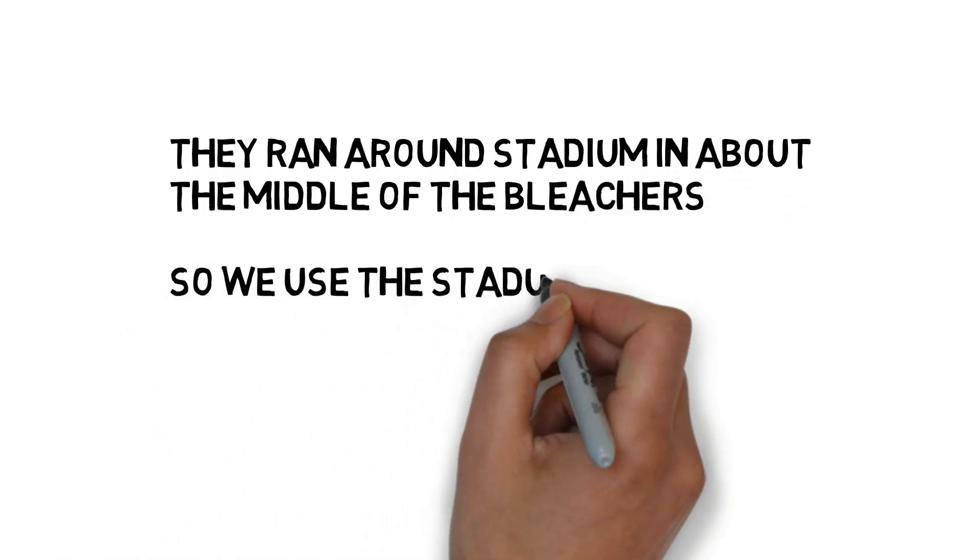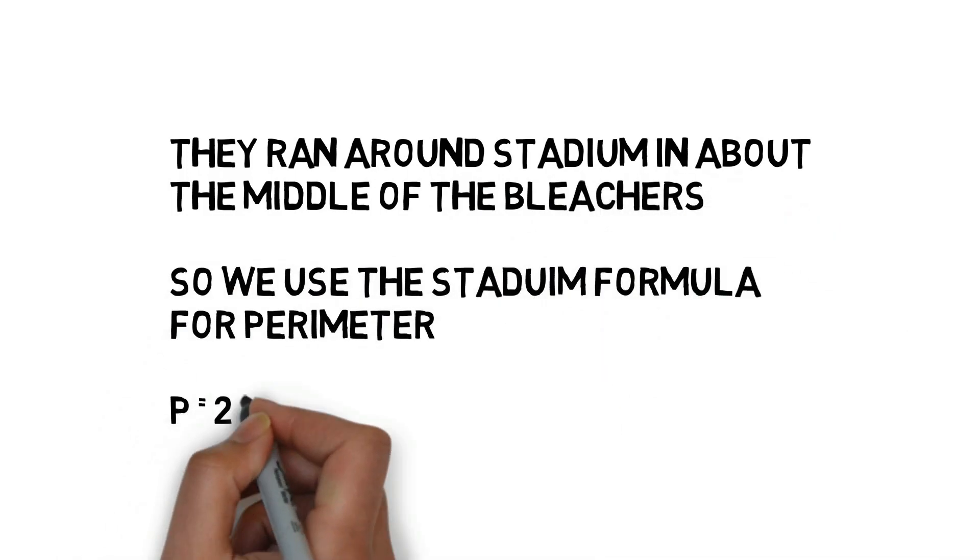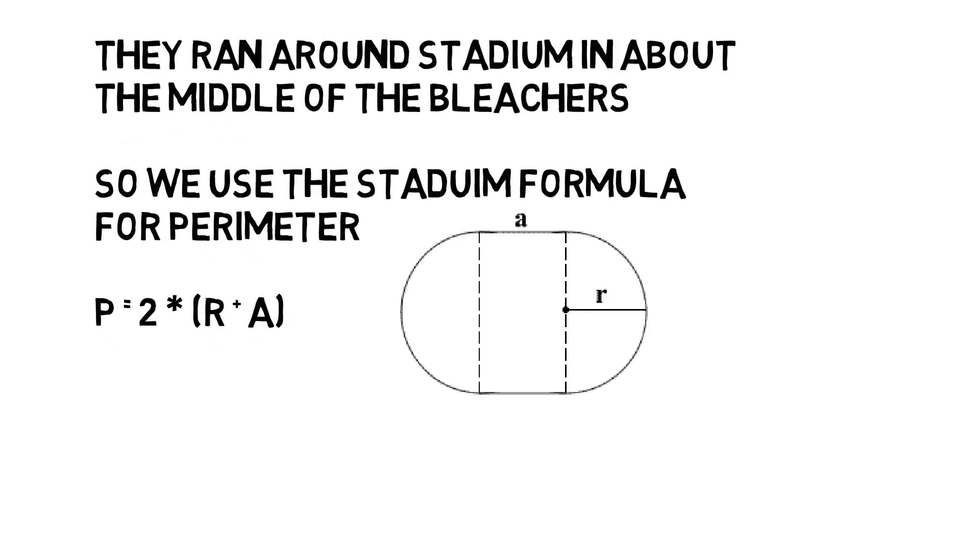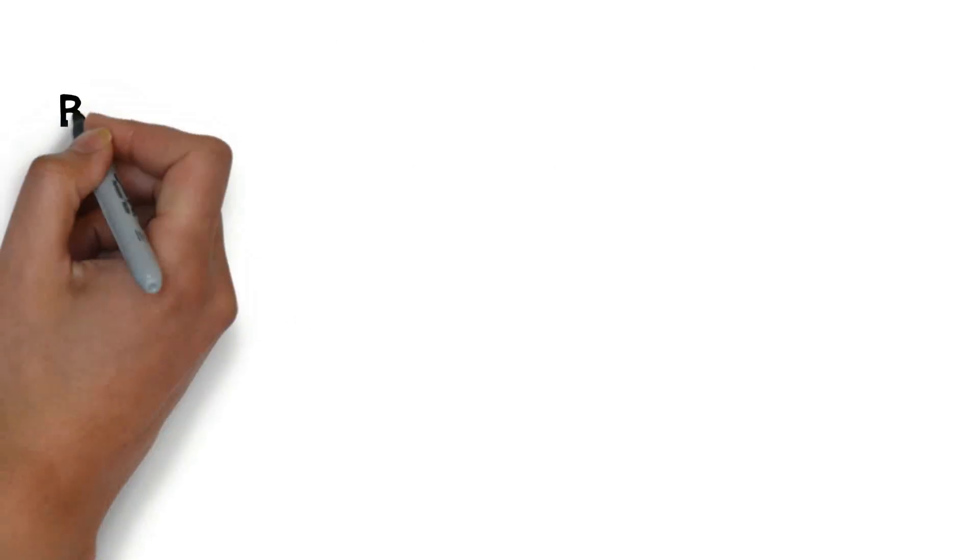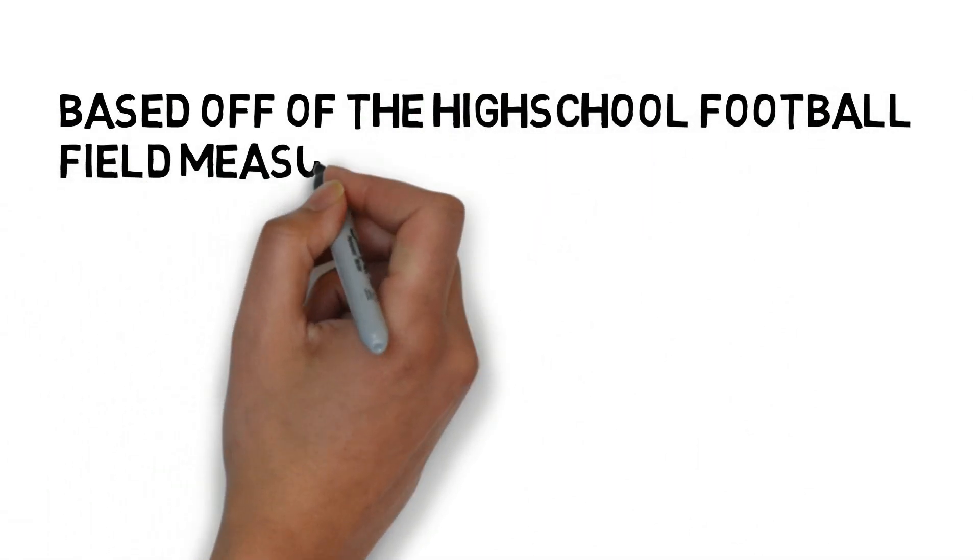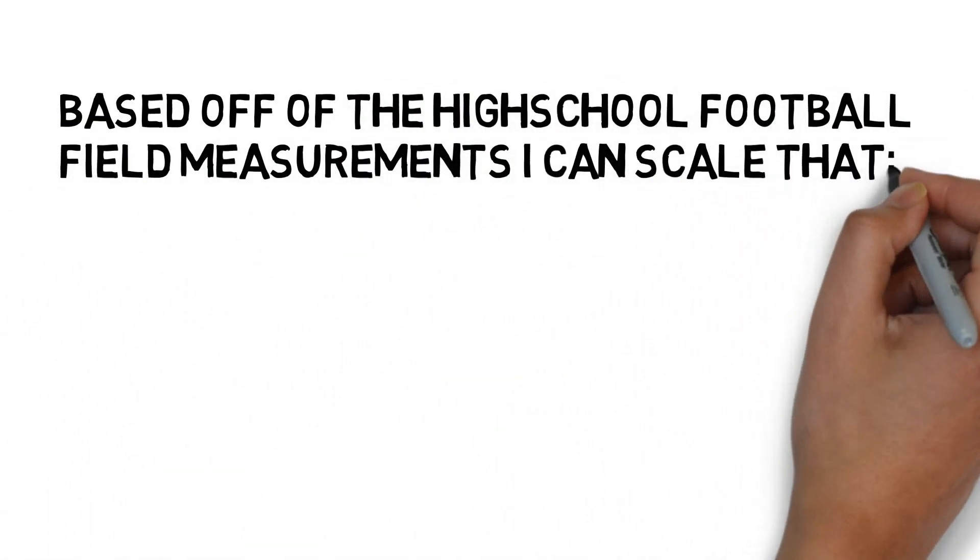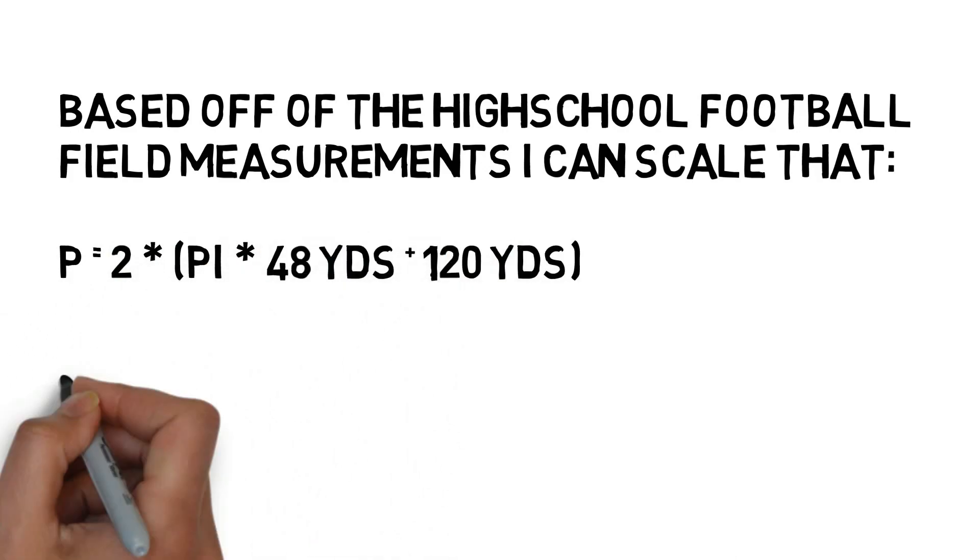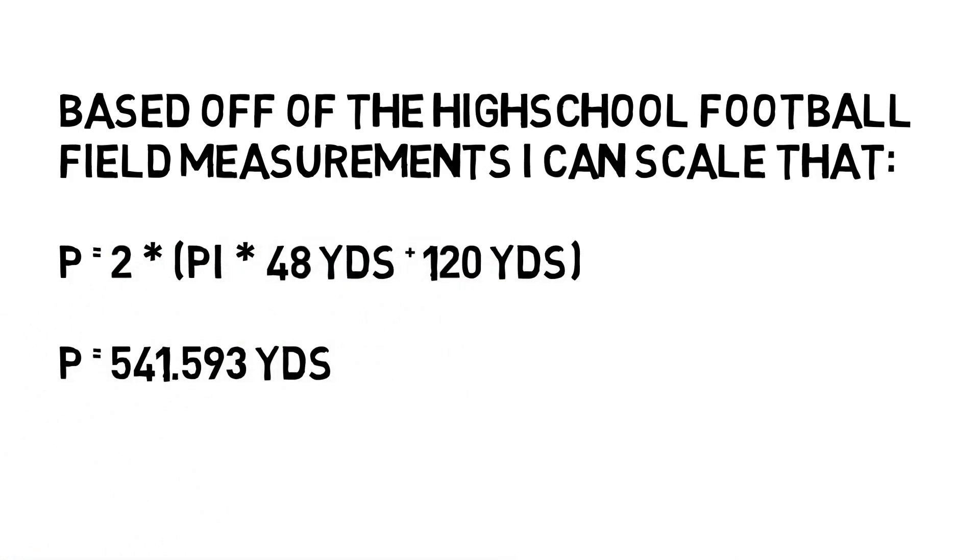They ran around the stadium in about the middle of the bleachers. So we used the stadium formula for perimeter, which is perimeter equals 2 times pi times r plus a. Based off the high school football field measurements and dimensions, I was able to scale that the perimeter that they ran is actually 541 yards.